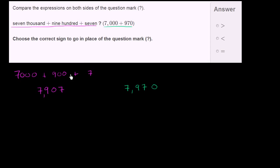Or if we wanted to expand it out, we could write that as 7,000 plus 900 plus 70. And then we have 0 ones.